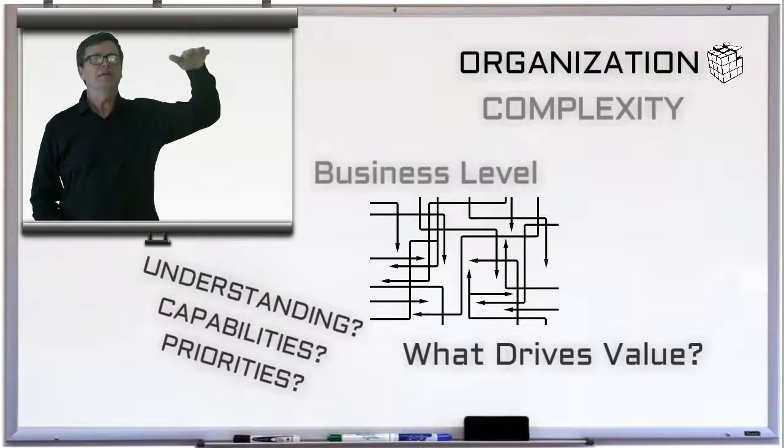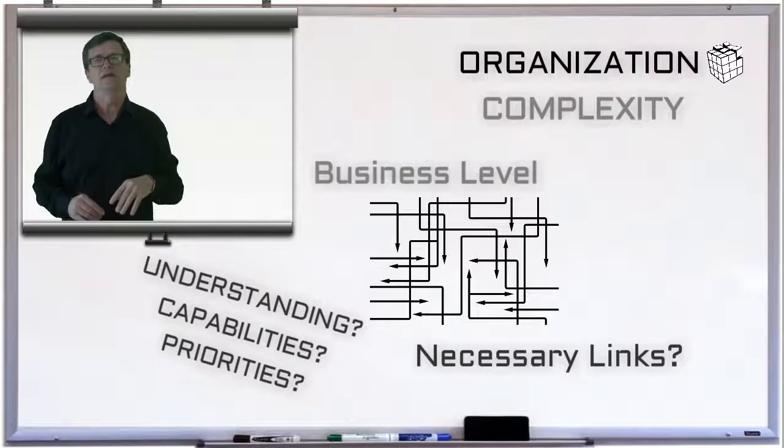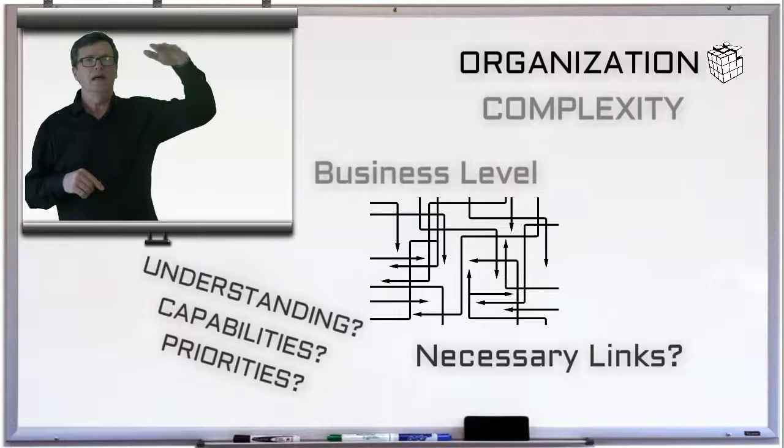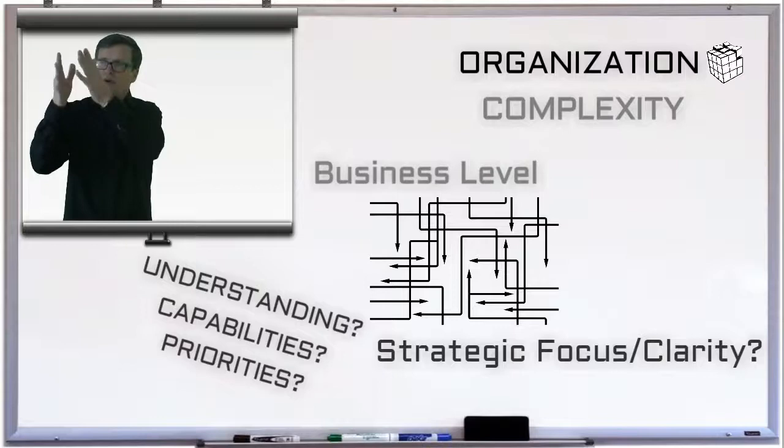Bad complexity at the business level can also occur because the organization lacks the necessary links between customers, cost, capability, etc. And another reason bad complexity can attack the organization at the business level is because there's a lack of strategic focus or clarity. And because of that gap, there's no alignment between activities that support growth and the growth which is being achieved.